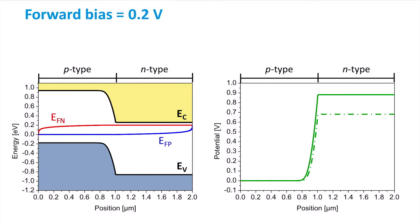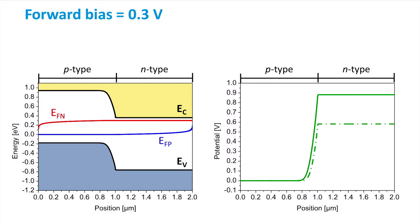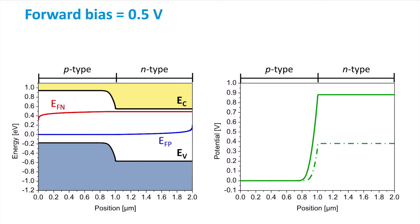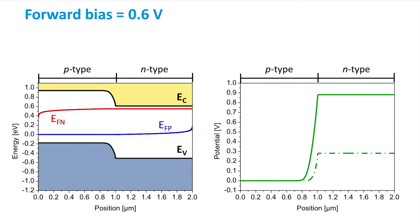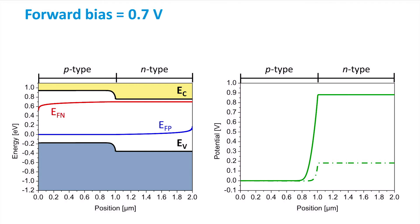As we increase the bias voltage to 0.2 volts, we can see a further increase in the split between the quasi-Fermi levels and a shrinking of the potential difference between the conduction bands in the P- and N-type regions. Now we have reached 0.7 volt applied forward bias. You can see that the band edges are almost flat, meaning the potential difference between the two sides of the PN junction depletion region is small, and there is a significant current flowing through the diode.